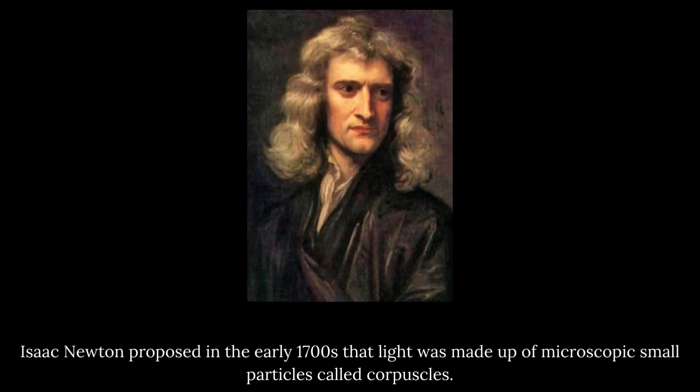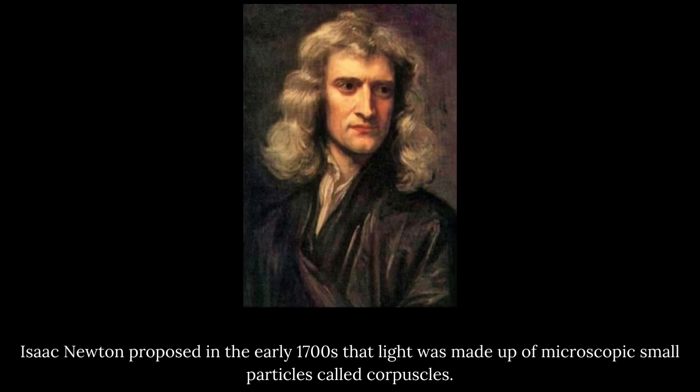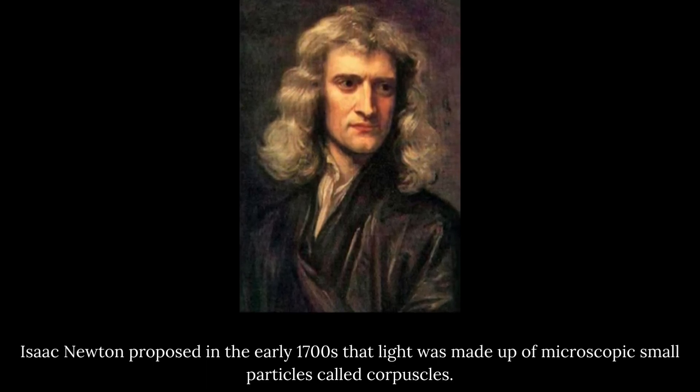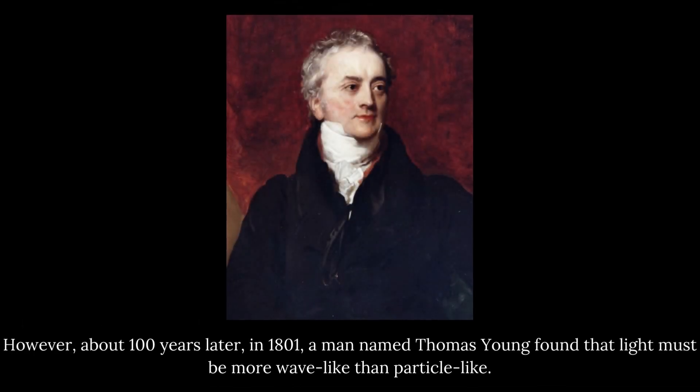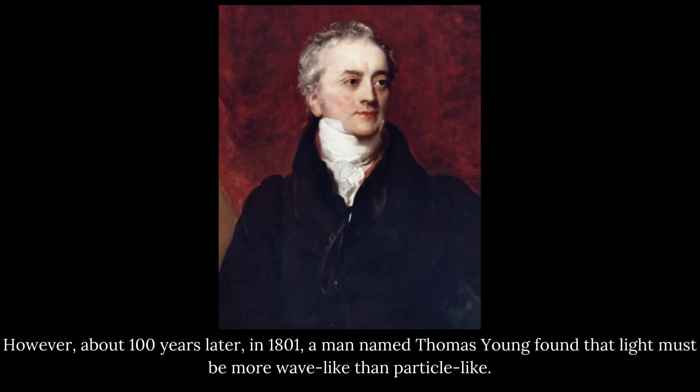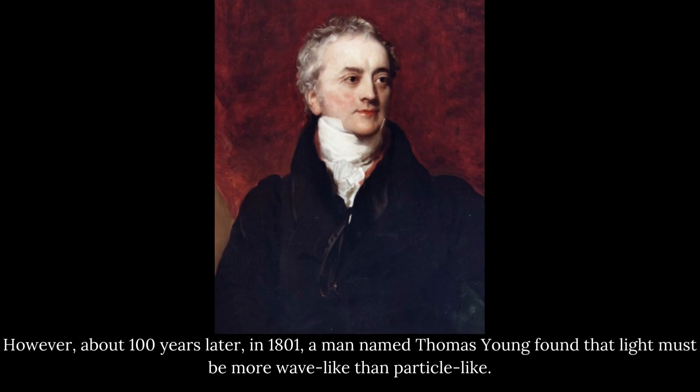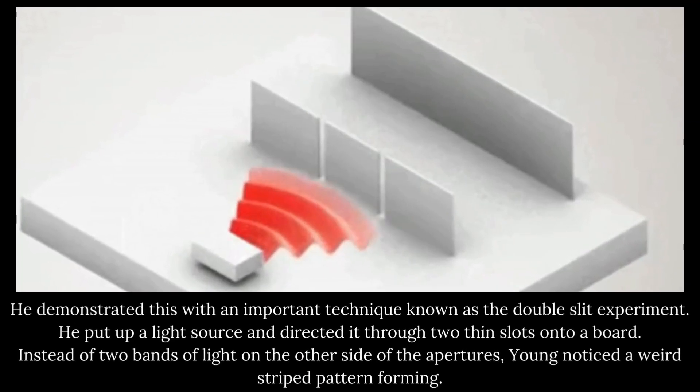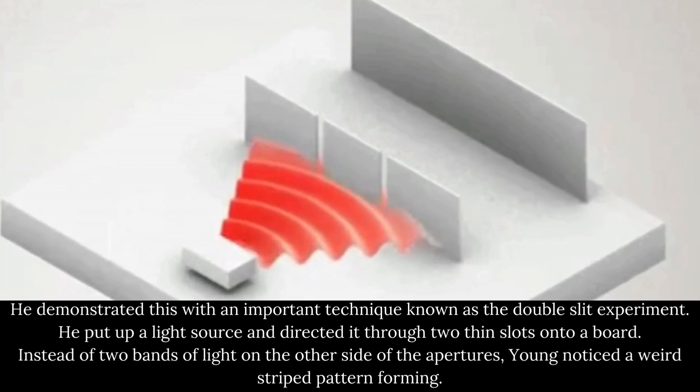Isaac Newton proposed in the early 1700s that light was made up of microscopic small particles called corpuscles. However, about 100 years later, in 1801, a man named Thomas Young found that light must be more wave-like than particle-like. He demonstrated this with an important technique known as the double-slit experiment.